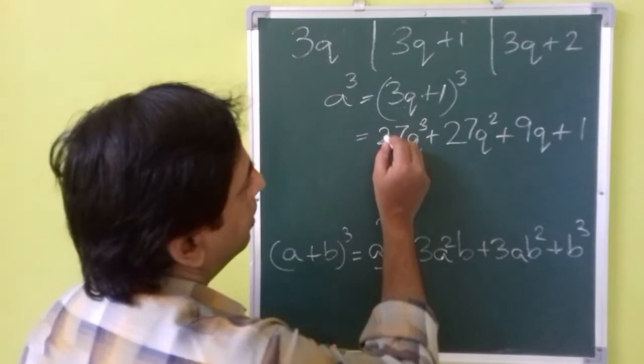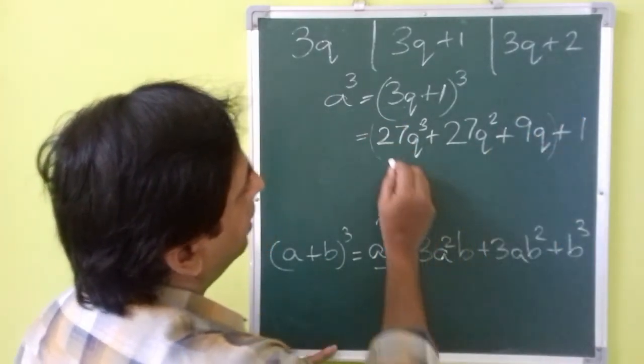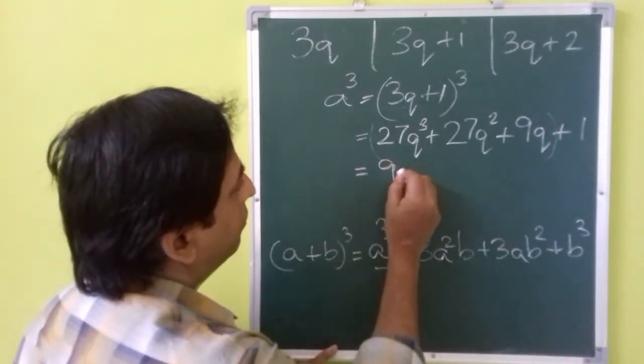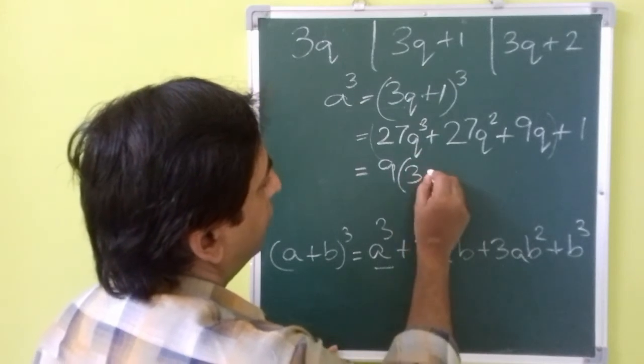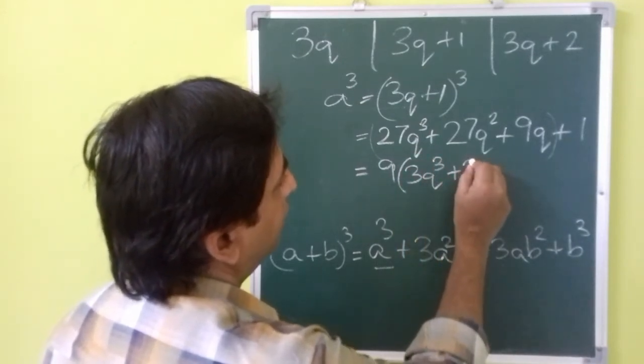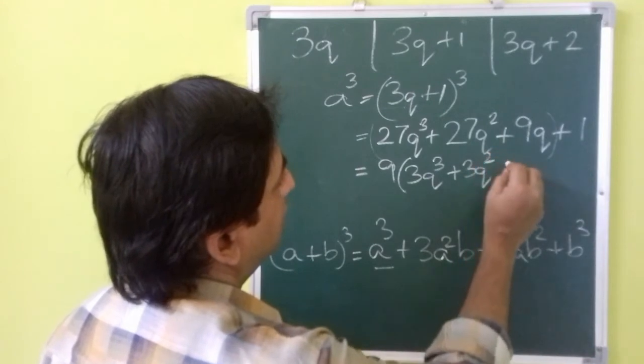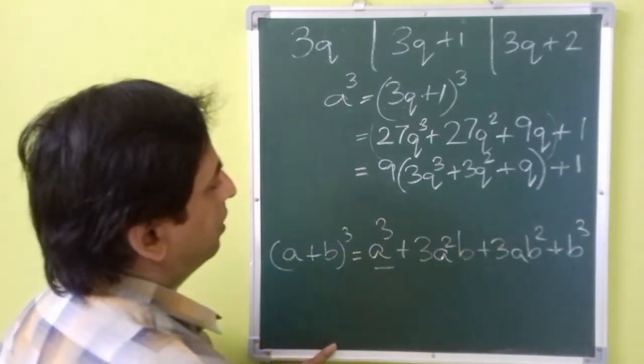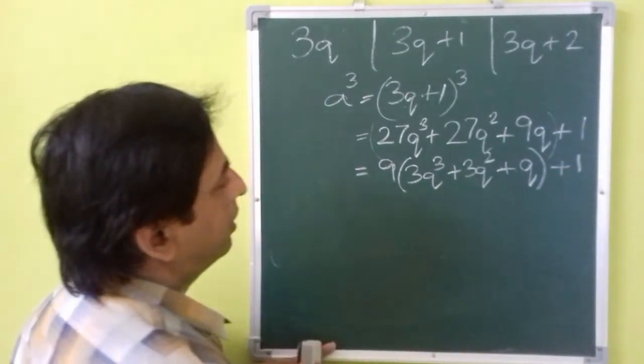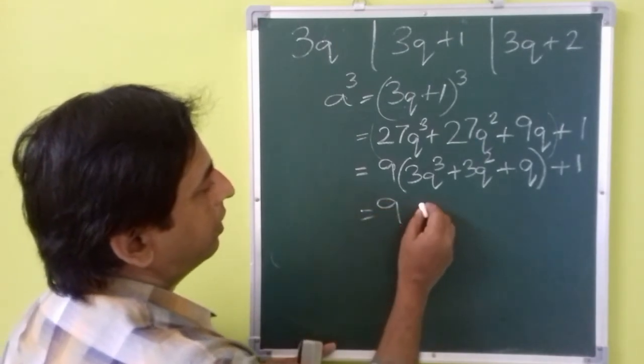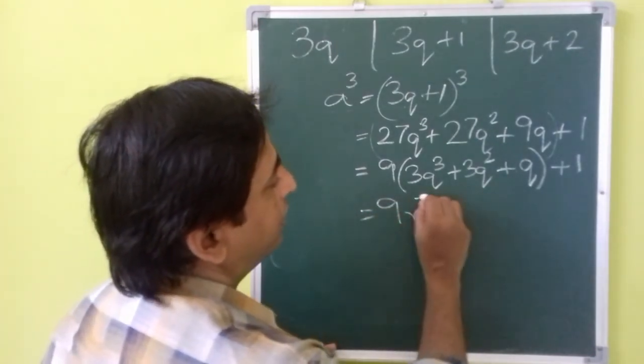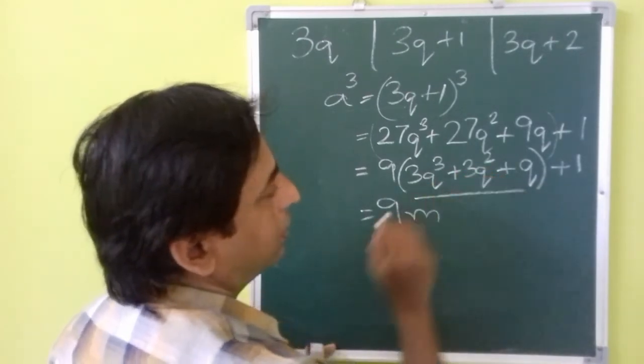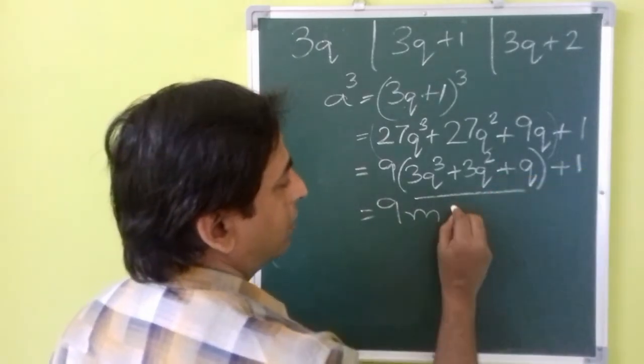Here you can see that all these terms have 9 as a common factor. We can take it out, which will give you 9 times 3q cube plus 3q square plus 3q plus 1, which is in the form of 9m plus 1, where m is equal to 3q cube plus 3q square plus q.